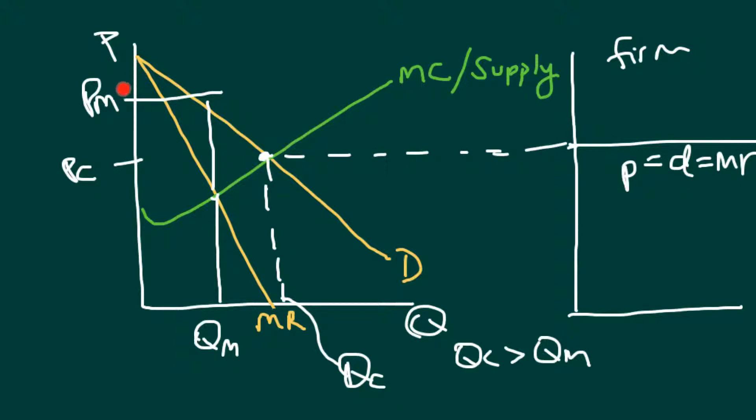And then we can do the same thing with price. You can see that the price a competitive industry would charge is much less than what a monopolist would charge. And so this here is basically where the bias against monopolies come from. That monopolies are going to charge a higher price and provide less output.